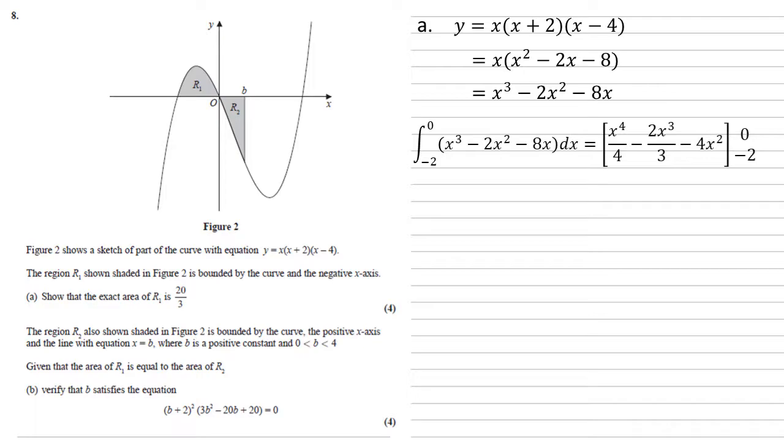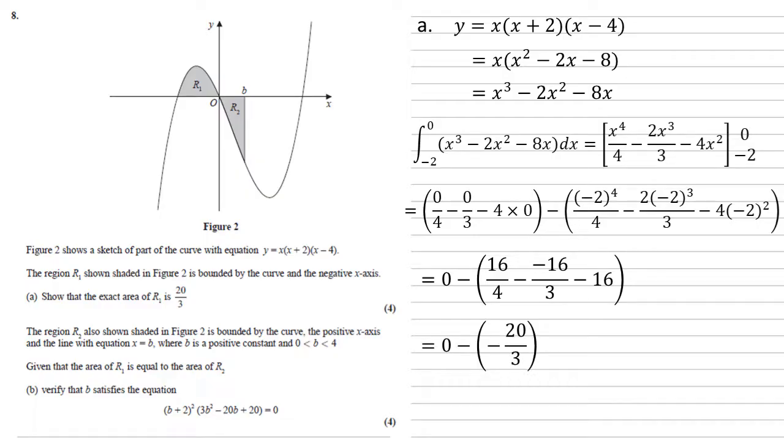So now we're going to substitute the minus 2 and the 0 in. So in our first bracket we go with the top number, the 0. So that's 0 over 4 minus 0 over 3 minus 4 times 0. For the second bracket which we're taking away, we substitute in the negative 2. So negative 2 to the power of 4 over 4 minus 2 lots of negative 2 cubed over 3 minus 4 lots of negative 2 squared. Well the first bracket is just 0. The second bracket gives us 16 over 4 minus negative 16 over 3 minus 16. So that's 0 minus negative 20 over 3, which equals 20 over 3 as required.